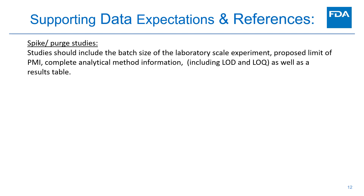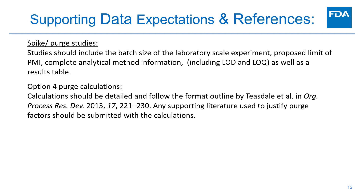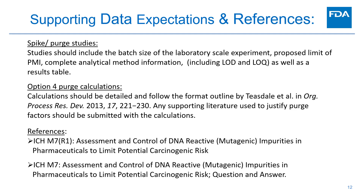Before concluding, I want to address supporting data expectations specifically for spike-purge studies and Option IV purge calculations. Spike-purge studies should include the batch size of the laboratory scale experiment, the proposed limit of the PMI, complete analytical method information including LOD and LOQ, as well as a results table. The Option IV calculation should be detailed and follow the format outlined by Teasdale et al. in the referenced paper. Any supporting literature used to justify purge factors should be submitted with the calculations. The ICH M7 guidance and supporting documents can be found on the ICH website.